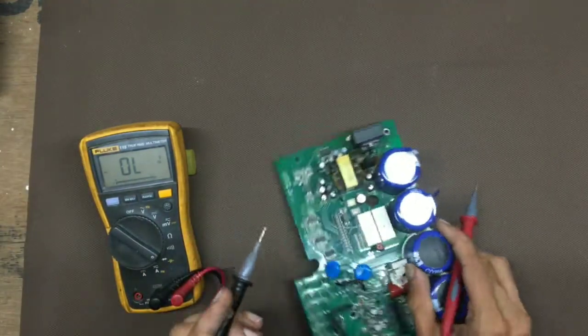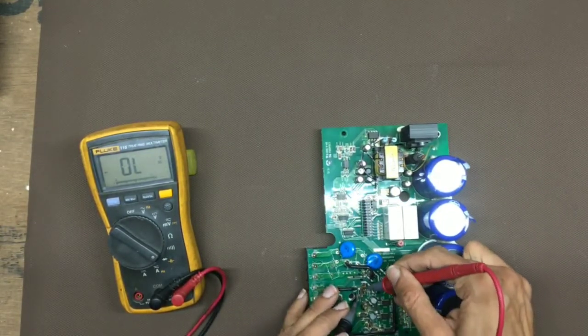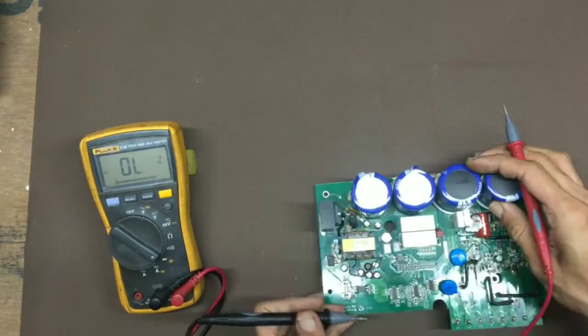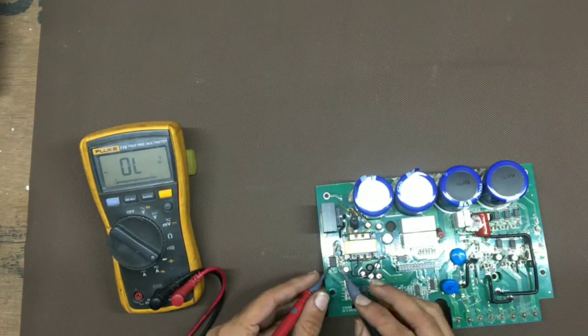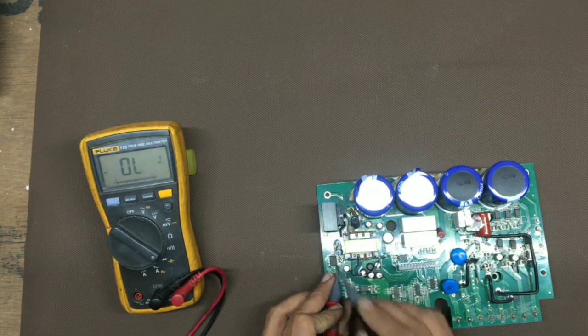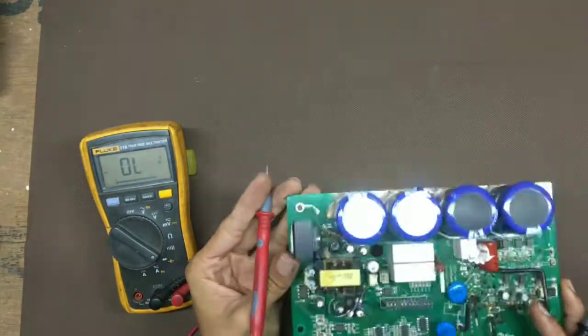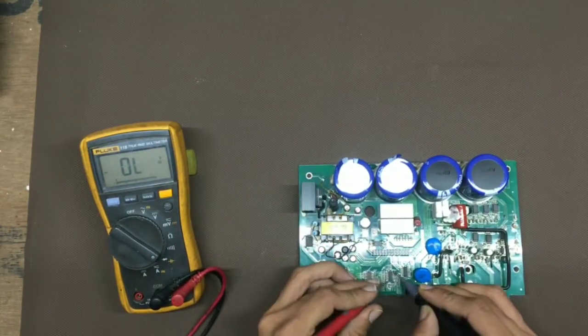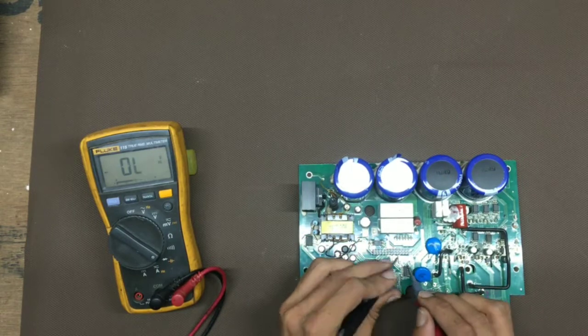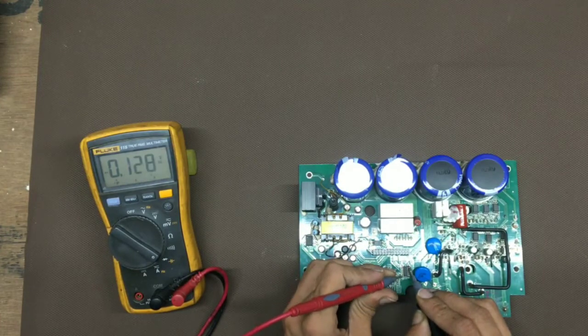So, let's check the diodes. Okay. Okay. Okay. Okay. This is the switching IC. So, let's check. Okay. It's a little bit down.